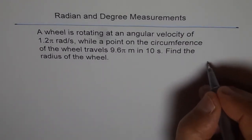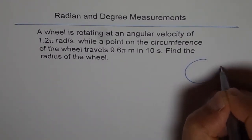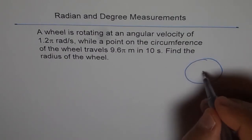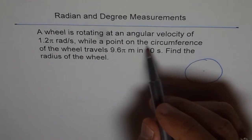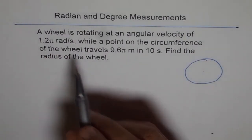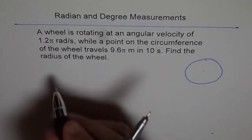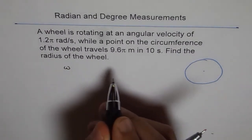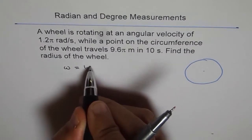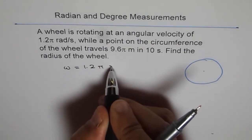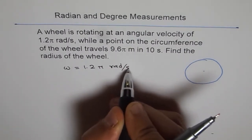So let's make a wheel. Let's say this is our wheel and that's our center. Now it says a wheel is rotating at an angular velocity of 1.2. So we'll write omega. Let omega be our angular velocity, and omega equals 1.2π radians per second.